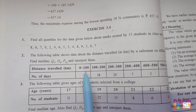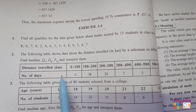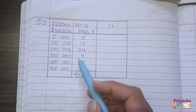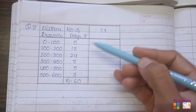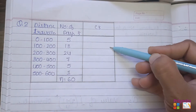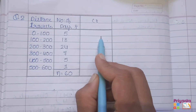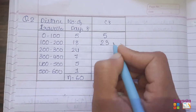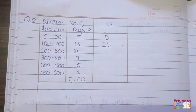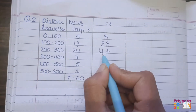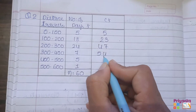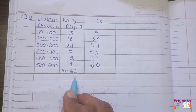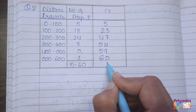First, take the table — the information is given in continuous class format. We need the frequency, from which we will prepare cumulative frequency. Write down the class (continuous class) and frequency. For cumulative frequency, keep adding the frequency: 5, then 5+18=23, then 23+24=47, then 47+7=54, 54+5=59, and 59+1=60. Since the cumulative frequency total matches the total frequency of 60, the cumulative frequency is correct.